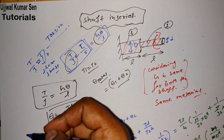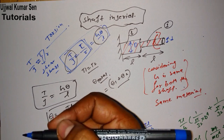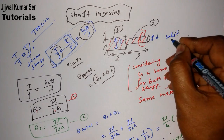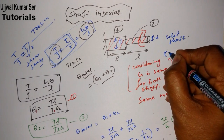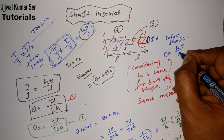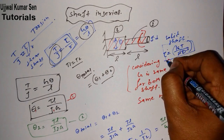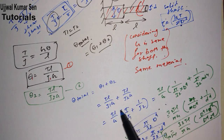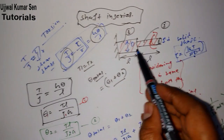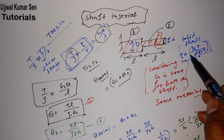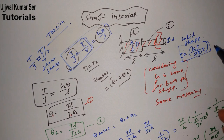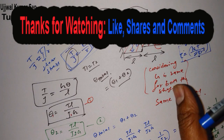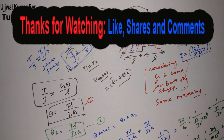For a solid shaft, the maximum shear stress is τ = 16T / (πD³), where D is the diameter of the shaft. You can use the same derivation process to find the shear stress from the torsion equation. Thanks for watching — see you soon in my next video. Bye.